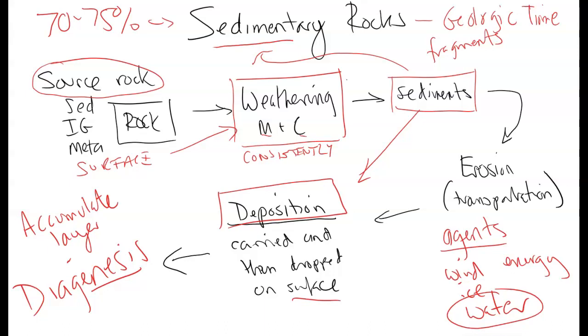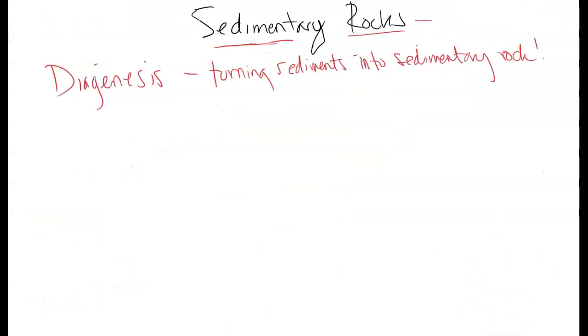This is the part where you make the actual rock in the surface. So you have this word diagenesis, which is basically you turn sediments into sedimentary rock through a step-by-step process.